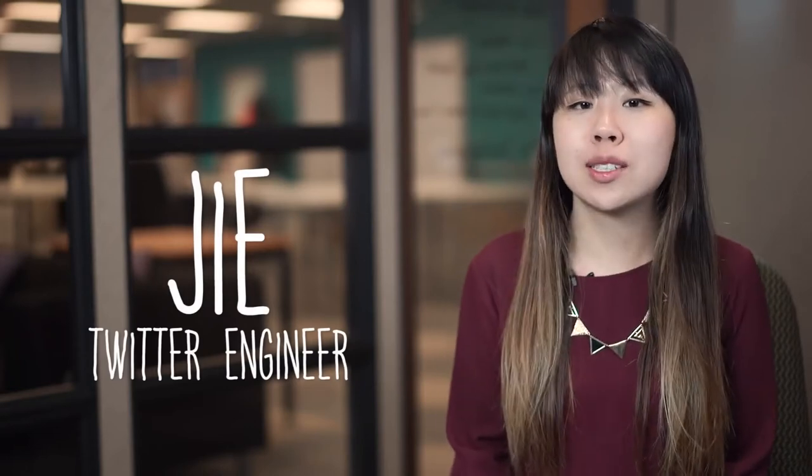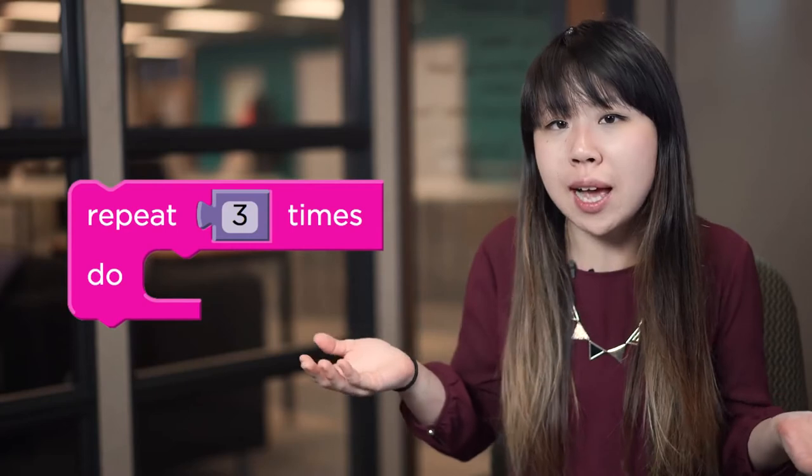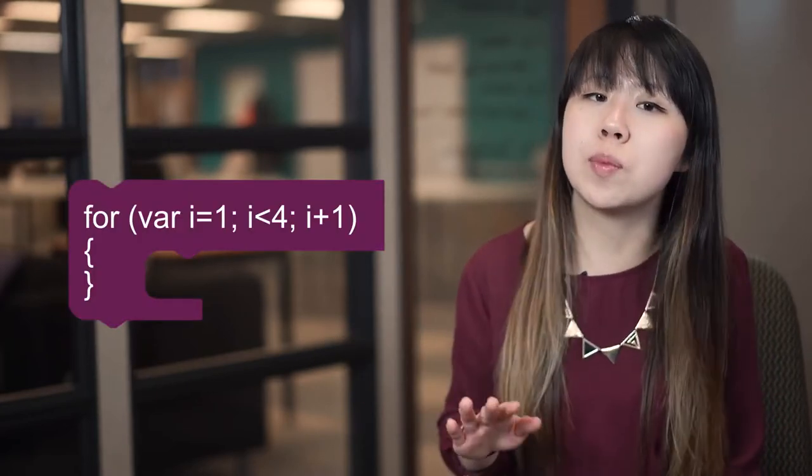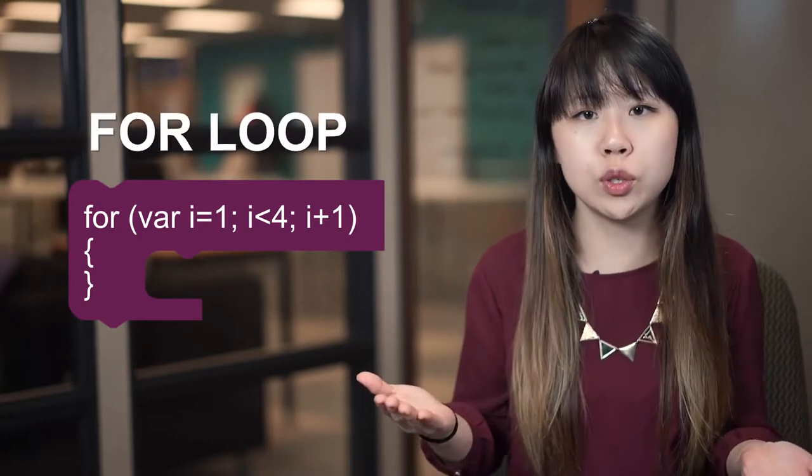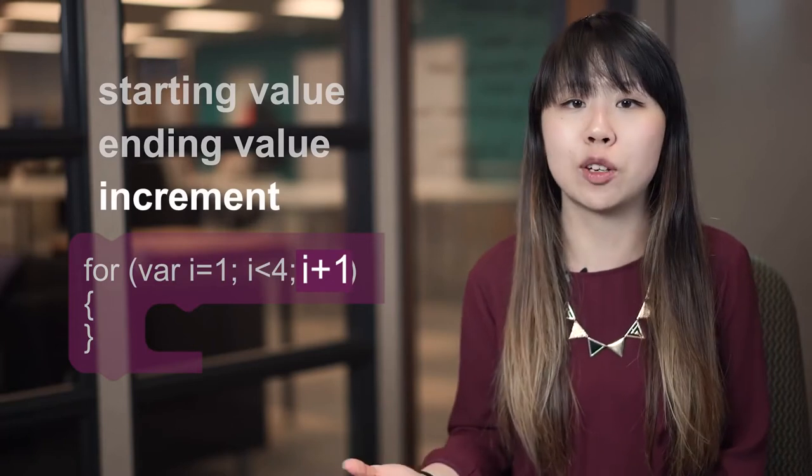So when you use a repeat block to loop your code, how does the computer know when it's repeated enough times? The repeat block is actually hiding a more sophisticated piece of code called a for loop, which counts from a starting value up to an ending value by a specific increment.